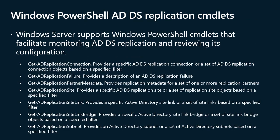Windows Server supports Windows PowerShell cmdlets for monitoring ADDS replication and reviewing its configuration, including: Get-ADReplicationConnection — provides a specific ADDS replication connection or a set of connection objects based on a specified filter; Get-ADReplicationFailure — provides a description of an ADDS replication failure; Get-ADReplicationPartnerMetadata — provides replication metadata for one or more replication partners; Get-ADReplicationSite — provides a specific ADDS replication site or set of site objects based on a filter; Get-ADReplicationSiteLink — provides a specific Active Directory site link or set of site links; Get-ADReplicationSiteLinkBridge — provides a specific Active Directory site link bridge or set of bridge objects; and Get-ADReplicationSubnet — provides an Active Directory subnet or set of subnets based on a specified filter.